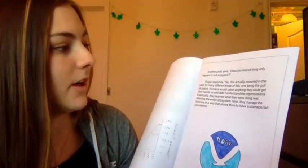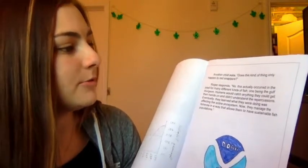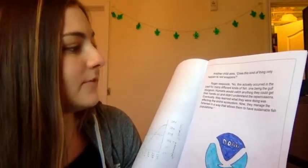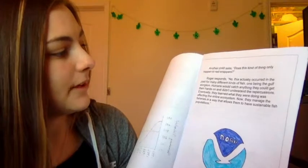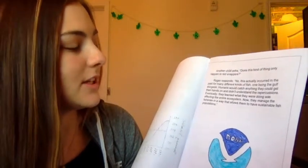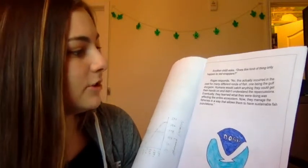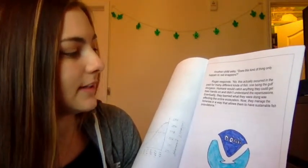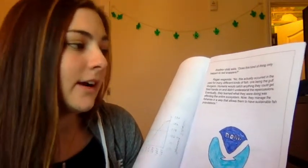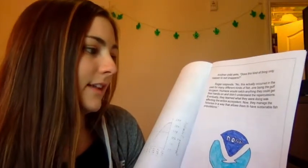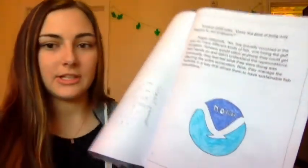Another child asks, does this kind of thing only happen to red snappers? Roger responds, no. This has actually occurred in the past for many different kinds of fish. One being the gulf sturgeon. Humans would catch anything they could get their hands on and didn't understand the repercussions. Eventually, they learned what they were doing was affecting the entire ecosystem. Now they manage the fisheries in a way that allows them to have sustainable fish populations.